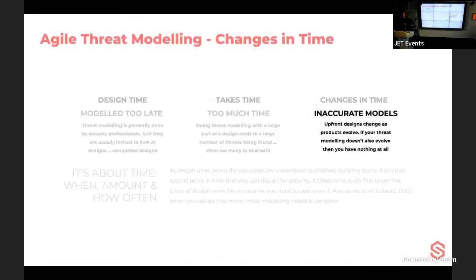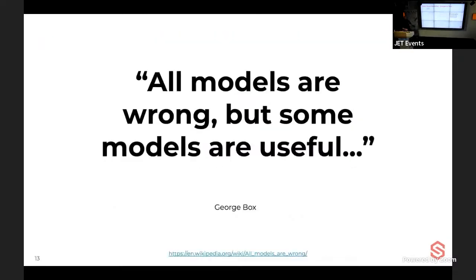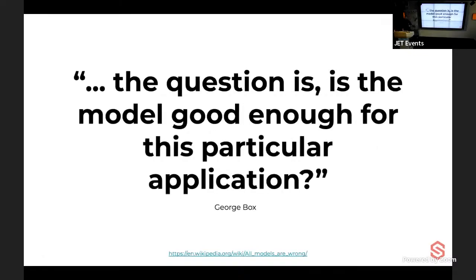We also end up with inaccurate models because things change quickly in agile — a new stack, new features, things that don't match what's actually running. As George Box said, 'All models are wrong, but some models are useful.' The question is whether the model is good enough for this particular application.